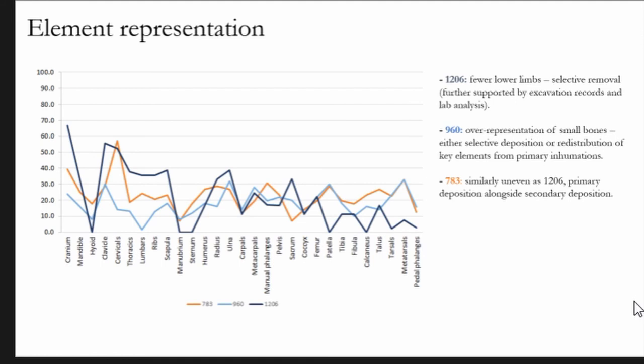Just to draw your attention to the last context of 783, it's similar to 1206 and goes back to my point about this irregularity and low representation of elements as a result of multiple practices happening.